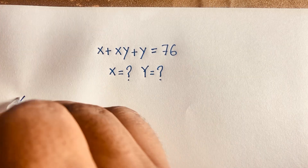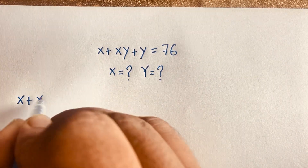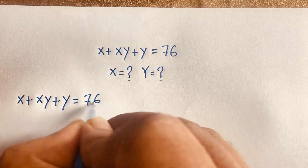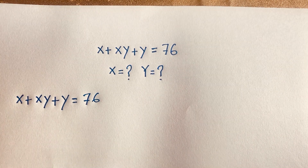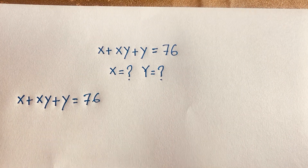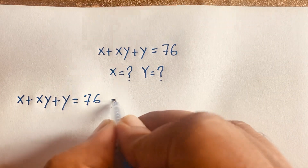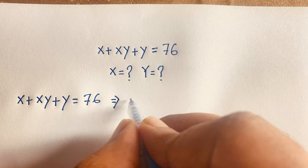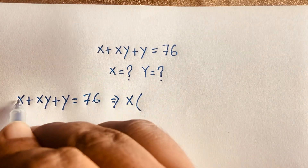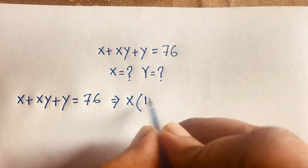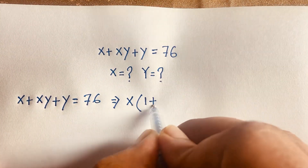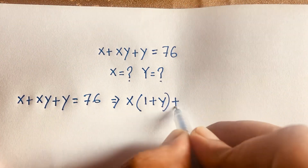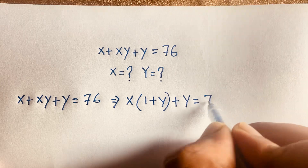The equation is x plus xy plus y is equal to 76. I can factor out x — x is common — so it becomes x times (1 plus y) plus y is equal to 76.